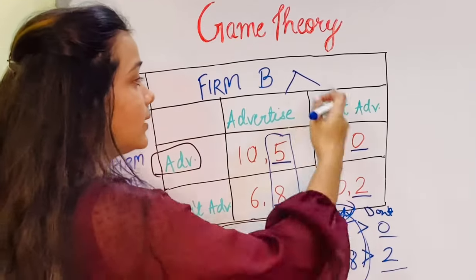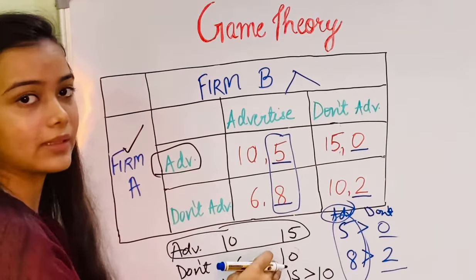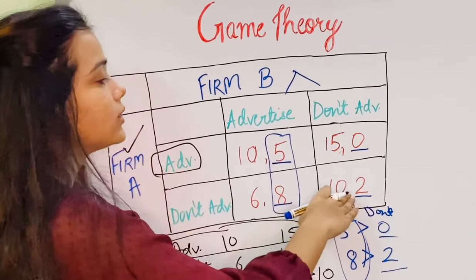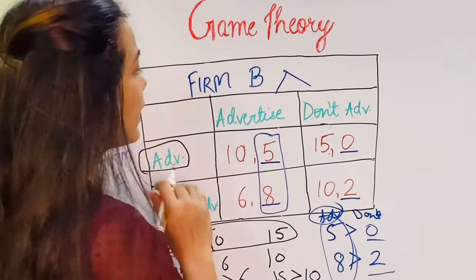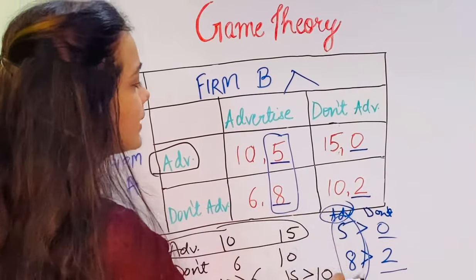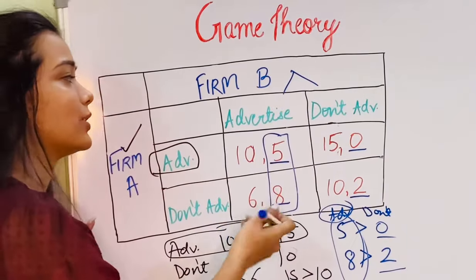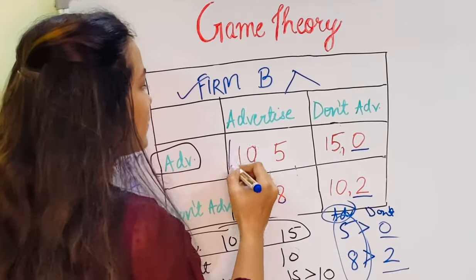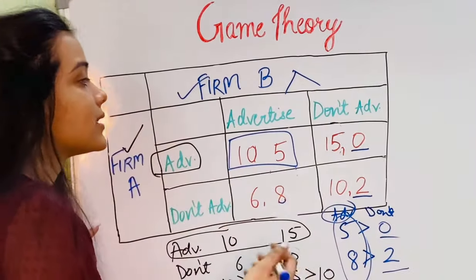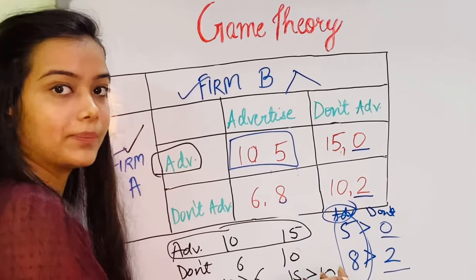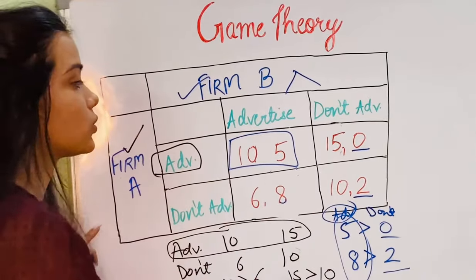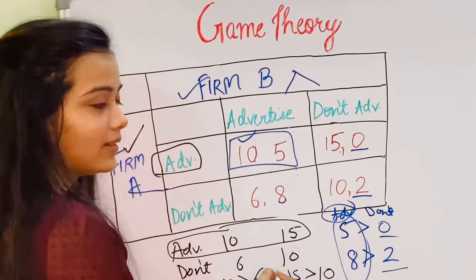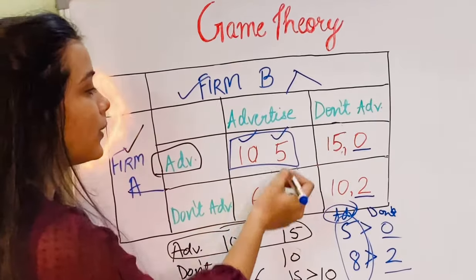Note that for Firm B we look vertically, whereas for Firm A we looked horizontally. Both firms have a dominant strategy in advertising. Considering that they are rational, both firms will choose to advertise, and Firm A will get a payoff of 10 while Firm B will get a payoff of 5.